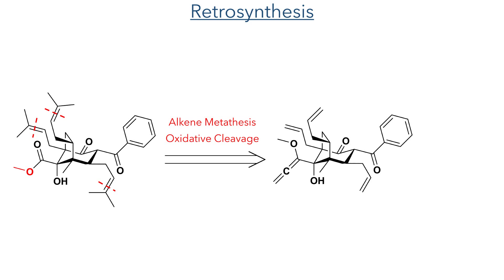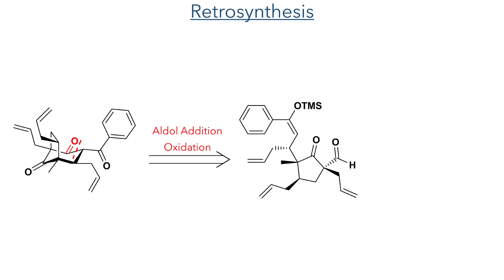So let's look at the retrosynthesis. The first disconnections occur at the prenyl groups and the methyl ester. The prenyl groups could be installed using olefin metathesis while the methyl ester could be introduced using oxidative cleavage of methoxyalene. This methoxyalene would be introduced using the selective alkylation of a diketone, which in turn would be installed using the oxidation of an alcohol. This alcohol would be formed by the aldol addition of a silyl enol ether used to form the bicyclic framework. The aldehyde necessary for this would be introduced using the reduction of an ester, and one of the alkenes necessary for the olefin metathesis would be introduced using a Sakurai reaction.